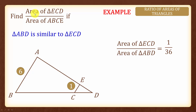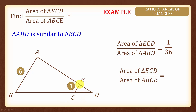Next, we are asked to find the area of triangle ECD over the area of trapezium ABCE. Since the area of triangle ECD over the area of the bigger triangle ABD is 1 to 36, the area of triangle ECD over the trapezium will be 1 to 35.